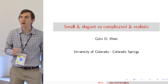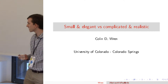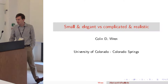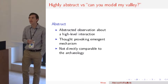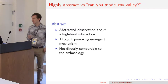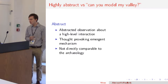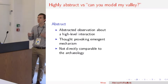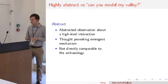I always have to talk about small and elegant versus complicated and realistic — two very different modeling approaches that any modeler tends to fall into one camp or the other. On one side is the highly abstract model, the simple elegance model, where you have some highly abstracted observation about cultural process. Ideally, this ends up creating some sort of thought-provoking emergent mechanism — some deep underlying individual-level behavior that aggregates up to one of these really interesting large-scale archaeological questions.